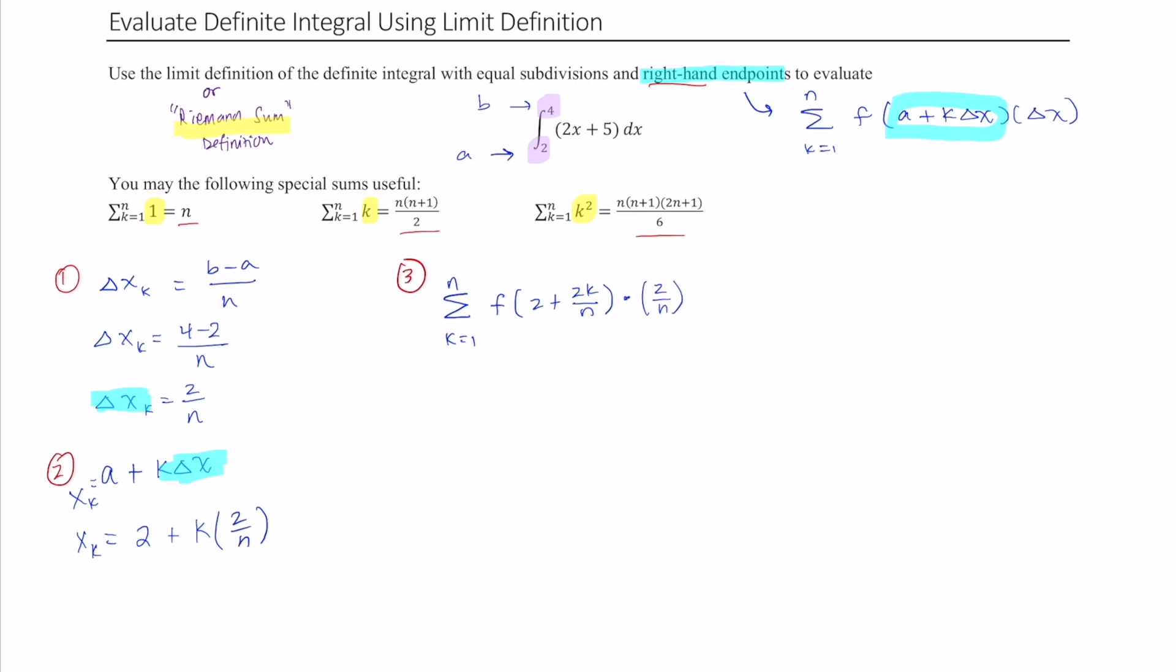All we did was this part right here, we just substituted that into the Riemann sum. We're going to substitute this into the f function, and our function is right here. So this is going to be equal to the summation of k equal to 1 of n of 2 times (2 plus 2k over n) plus 5, and then all of this will be multiplied by 2 over n. So this 2 over n, that's this 2 over n right here.